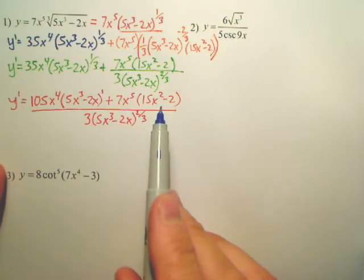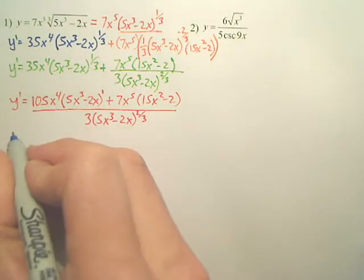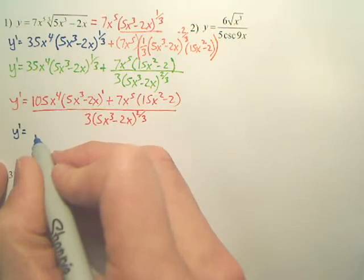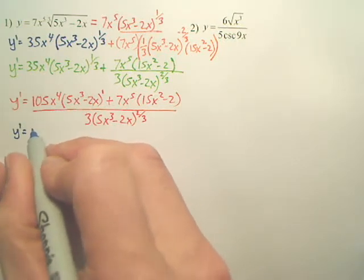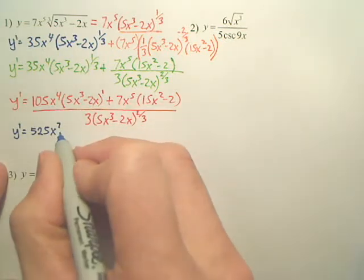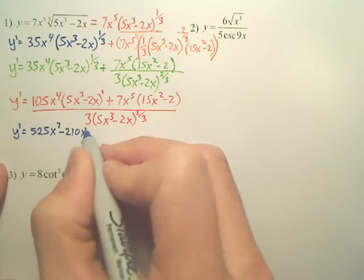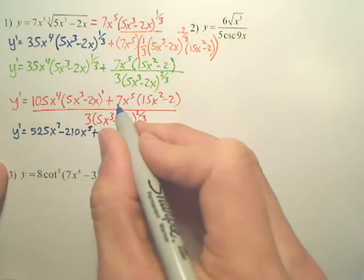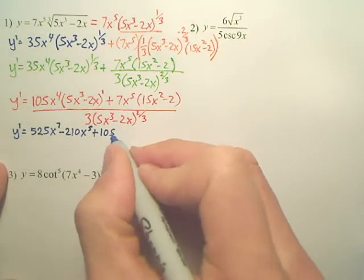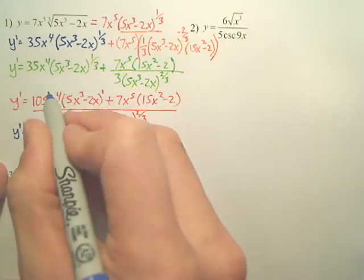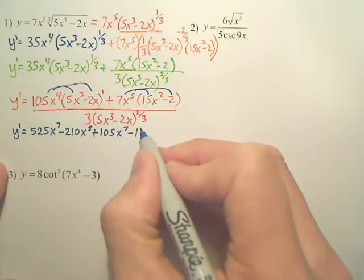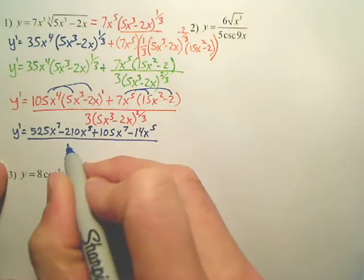Actually, no, it's not okay. This is a simple simplification on top. I have my reasons for future chapters. You have to keep going. What you now have. Distribute. 105 times 5 is 525? 525x to the 7th. And this one is going to be minus 210x to the 5th plus 7 times 15. Is that 105? 105x to the 7th. And this times this. Sorry, let me put some lines here. We're distributing. Minus 14x to the 5th. And rewrite the bottom.